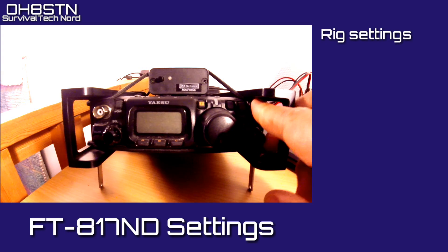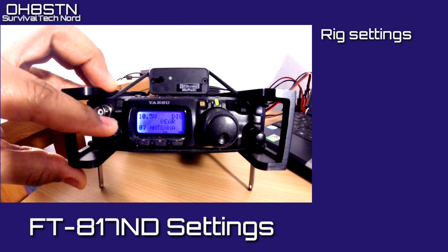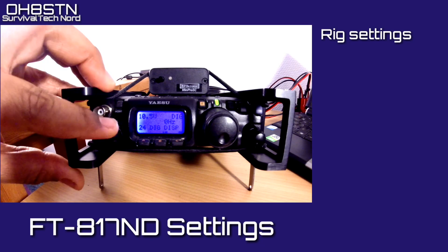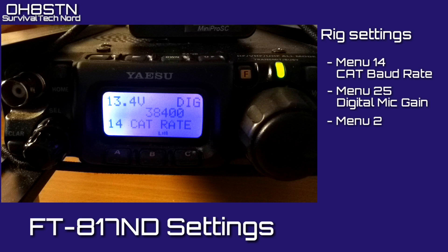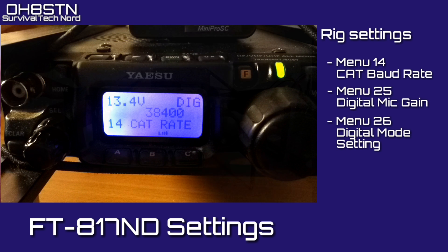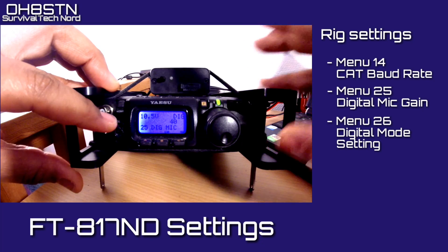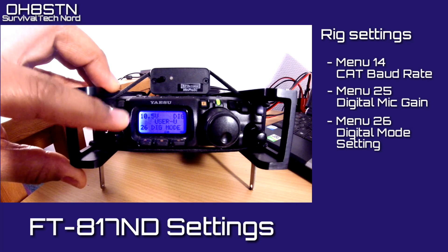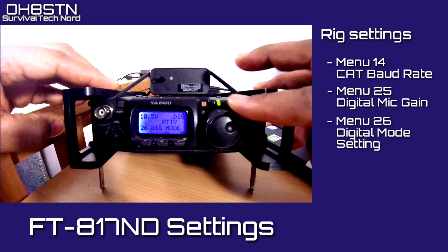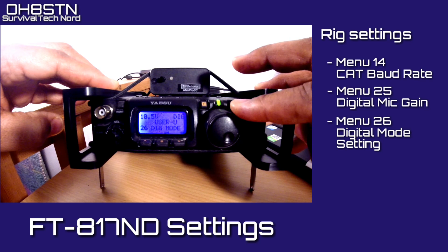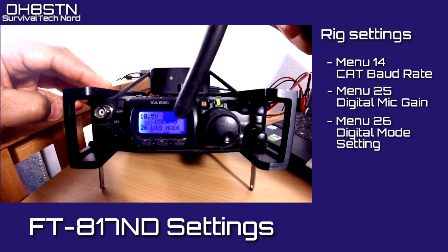The FT817 has a couple of menu settings that we need to adjust so that everything works correctly. Long press on the function button to get into the menu settings. We're specifically looking for menus 14, 25, and 26. Menu 14 is the CAT baud rate. Menu 25 is the digital mic gain for the data input/output on the back of your rig — I've got mine set to 40. Menu 26 is the digital mode setting; I have mine set for user USB. Since most digital communications on amateur radio take place on upper sideband, using user U will automatically put the radio in upper sideband when you select digital as the mode.